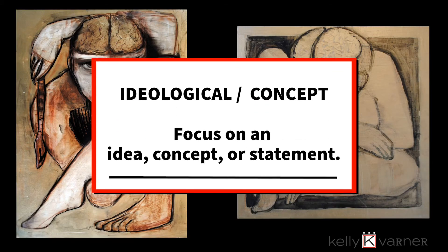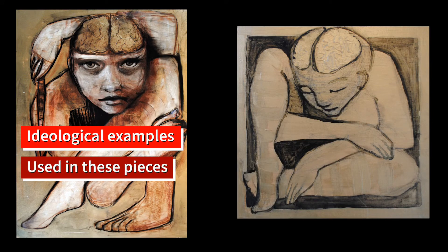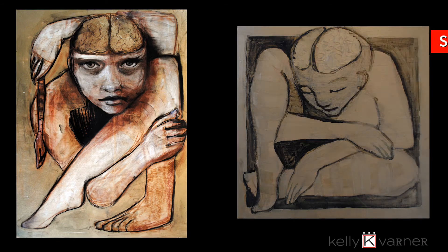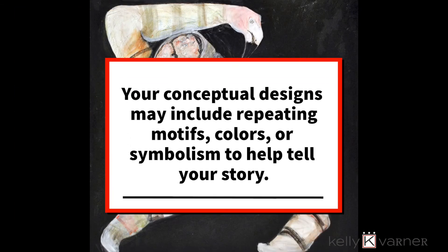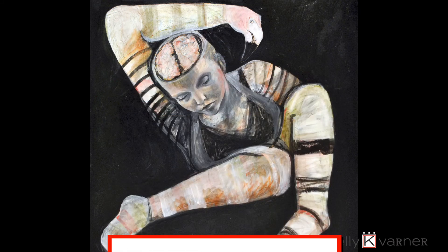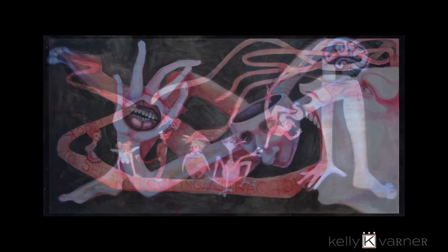The ideological series focuses on an idea, concept, or statement. The ideological examples used in these pieces are synesthesia, neurodiversity, epilepsy, and neurology. Conceptual designs may include repeating motifs, colors, or symbolism to help tell your story. Look for brains, stripes, squares, and distortion in the pieces throughout this video.